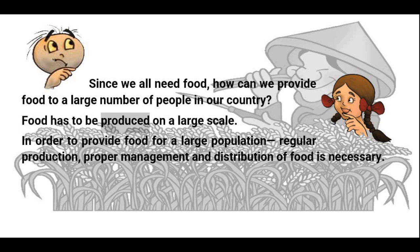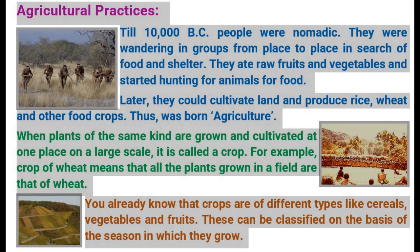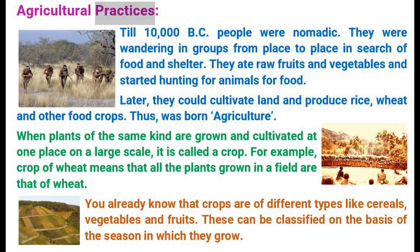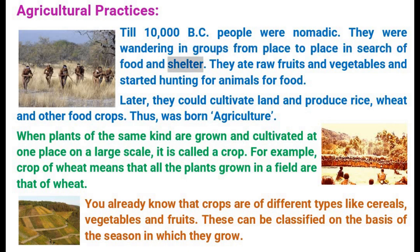Since we all need food, how can we provide food to a large number of people in our country? Food has to be produced on a large scale. In order to provide food for a large population, regular production, proper management and distribution of food is necessary. Up to 10,000 BC, people were nomadic — wandering in groups from place to place in search of food and shelter.